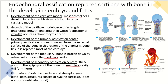The next step is the development of the primary ossification center. This primary ossification proceeds inward from the external surface of the bone, and the region that's forming is the diaphysis. The bone tissue is then going to replace most of that cartilage.